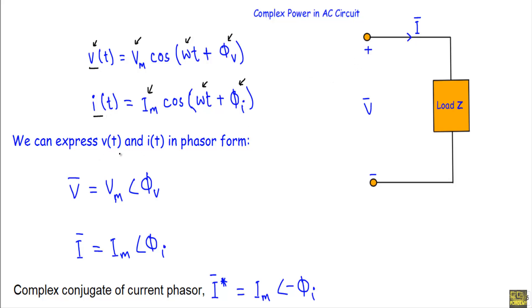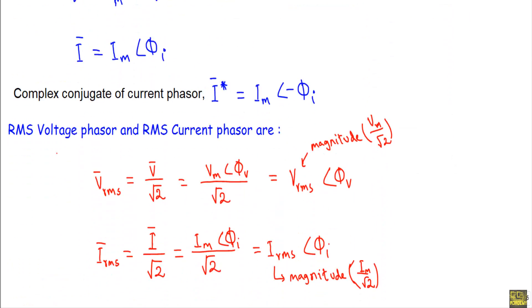If we express v(t) and i(t) in phasor form, voltage phasor V = Vm∠φv and current phasor I = Im∠φi. Now, for a complex number Z = r∠θ, its conjugate Z* = r∠(−θ); we just flip the sign of the phase angle in polar form. So for current phasor I = Im∠φi, the complex conjugate I* = Im∠(−φi).